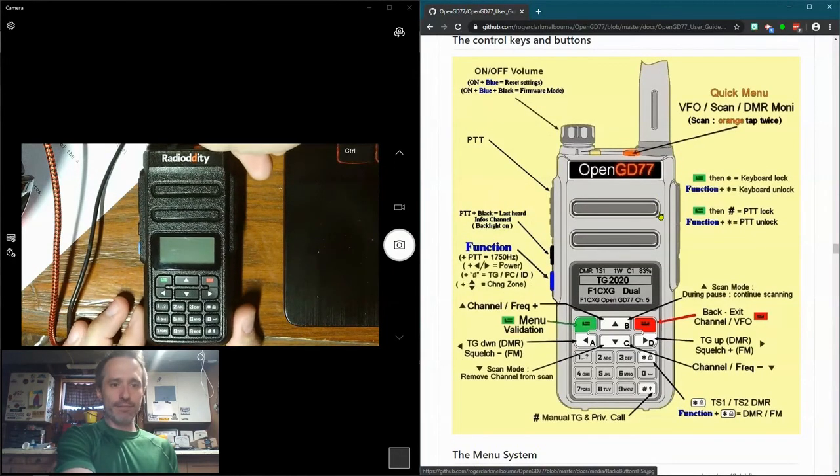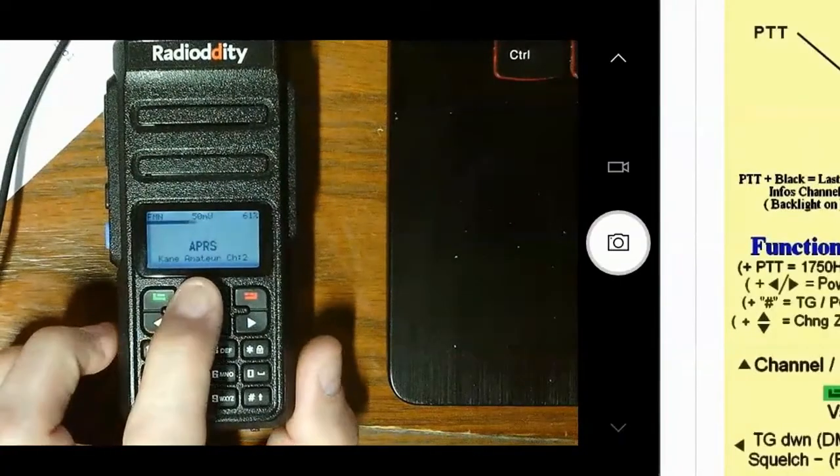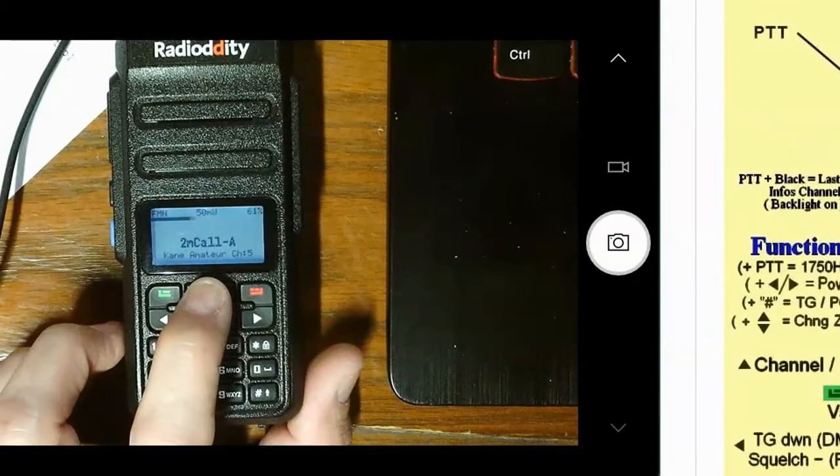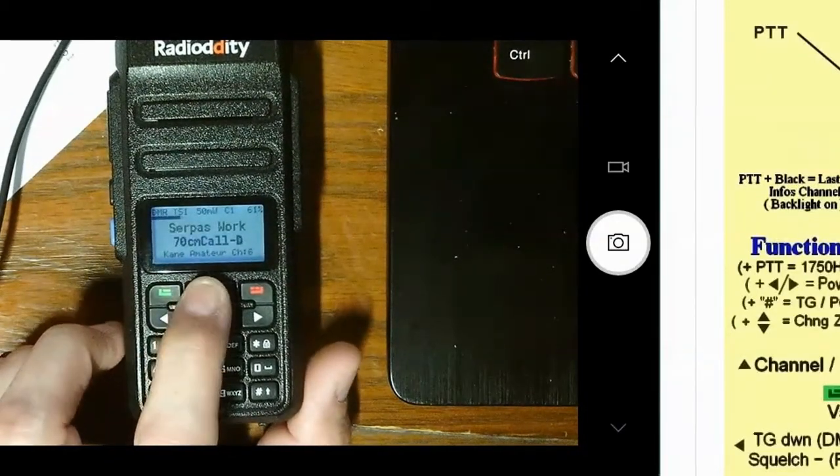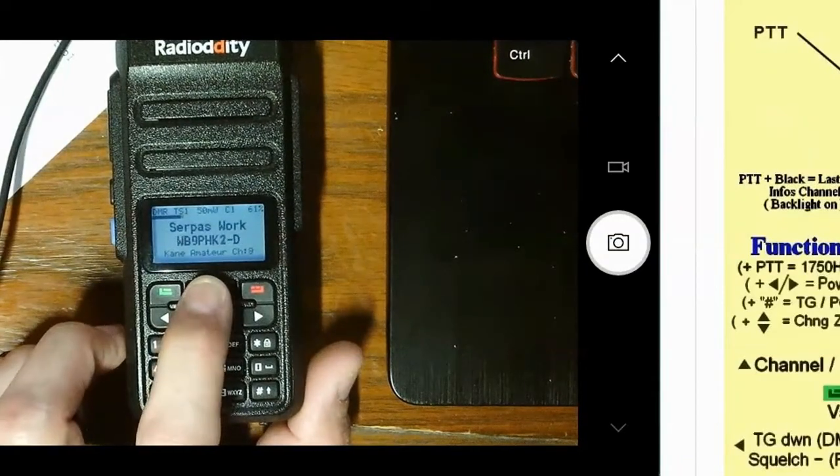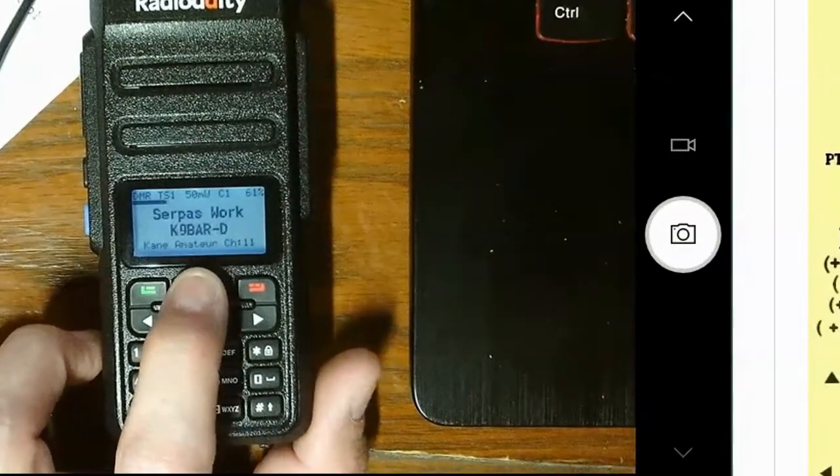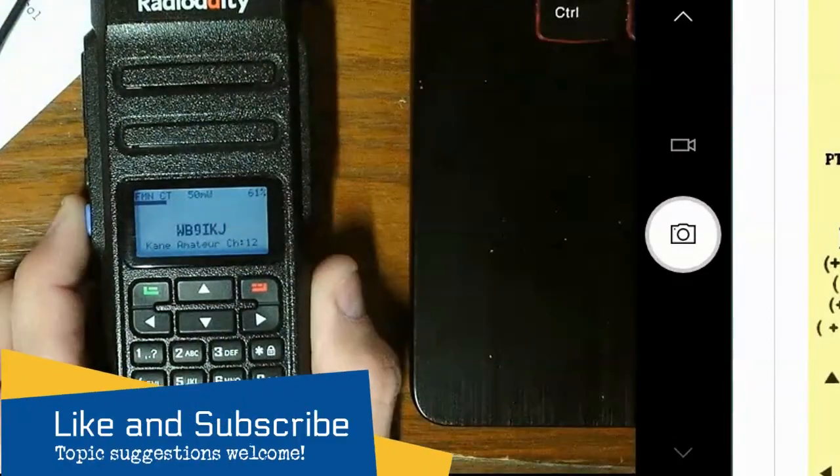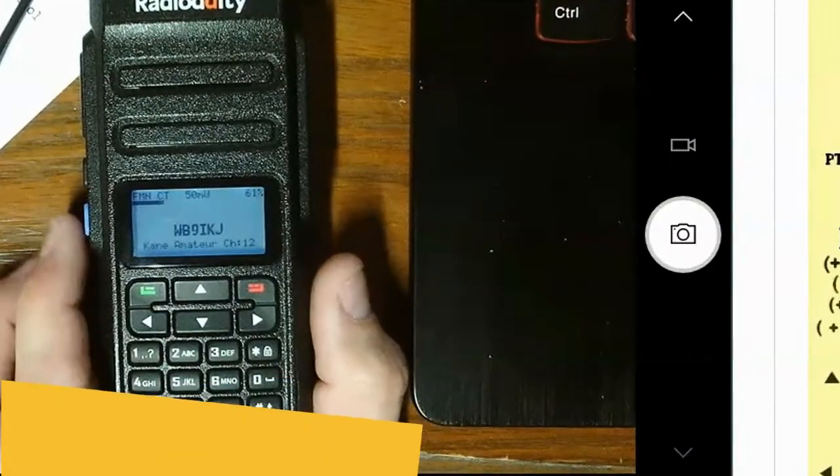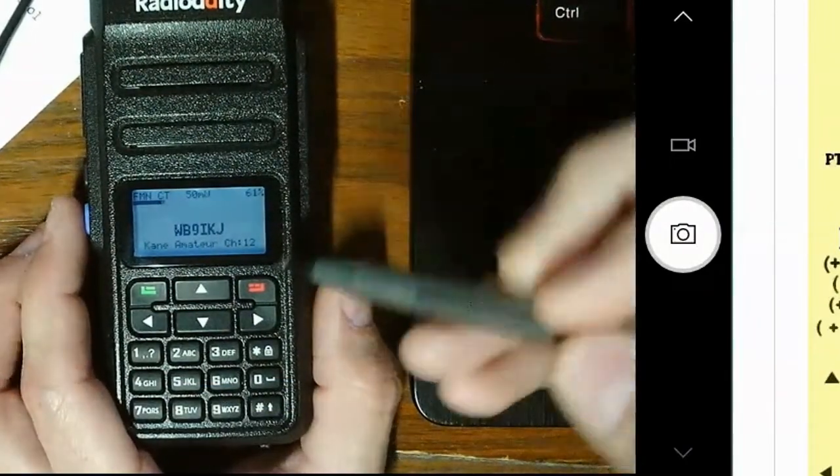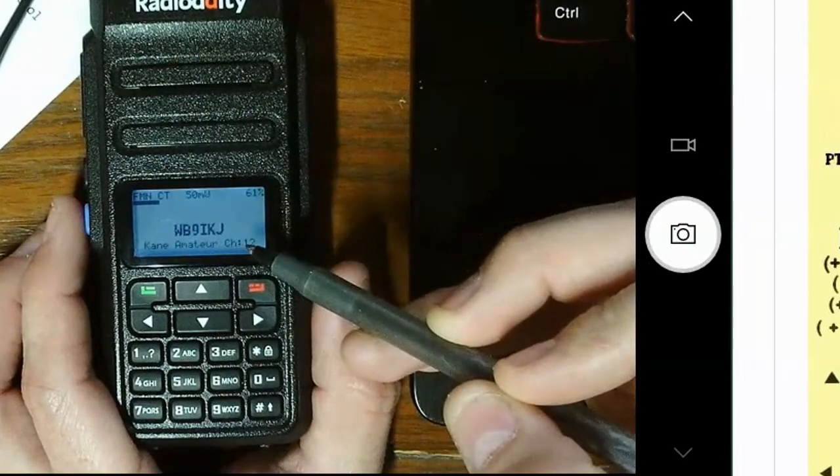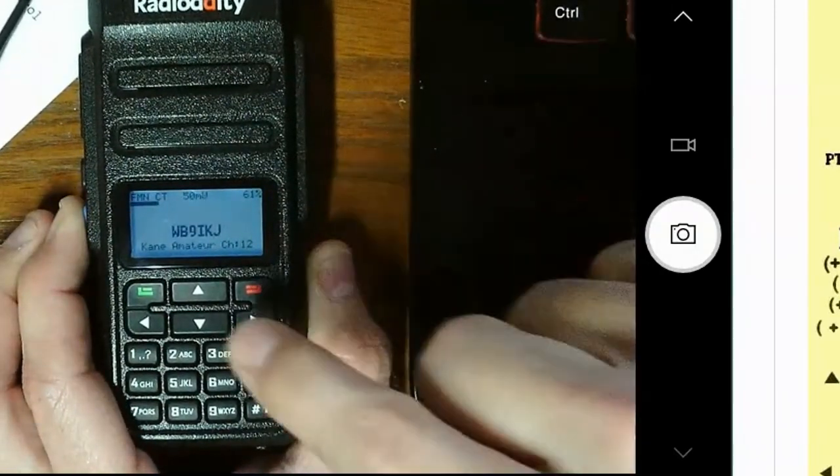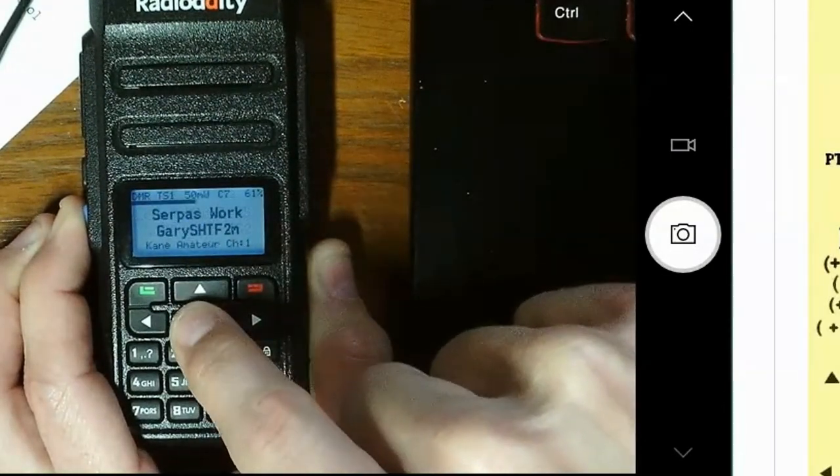So, here we have, alright. So this is my zone, Cane Amateur. Alright, and I can go through all those channels. Now, to change zones, I can also press the blue button. So the zone, let me get something to point with. The zone is listed down here, and this is channel 12. If I want to change zones, I can press the blue button and press up. And now I just changed my zone.